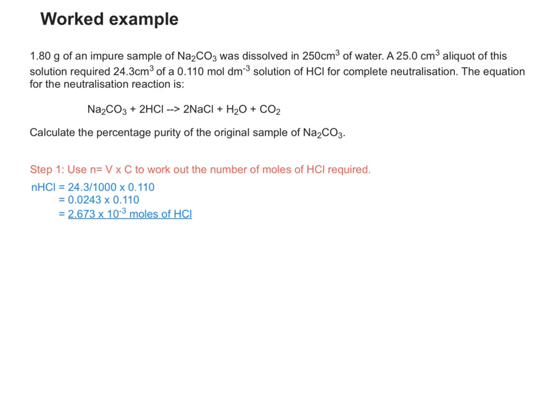We can see from the equation that for every one mole of HCl, you need half that number of moles of Na2CO3. The next thing to do is divide the answer to step 1 by 2 to get the number of moles of sodium carbonate in your 25 cm³ sample.